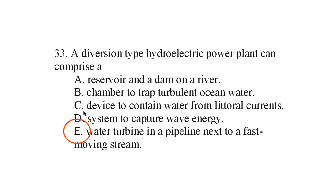C, a device to contain water from littoral currents? Well, littoral currents are sideways currents in the ocean. We could divert the water from those currents like we would do with a river and create a diversion type hydroelectric power plant, but merely containing the water won't do that.